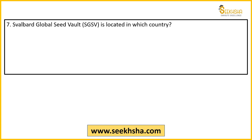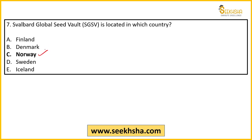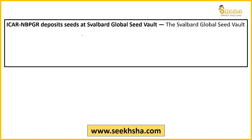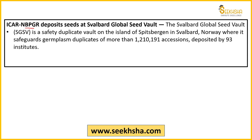Seventh and last question: Svalbard Global Seed Vault is located in which country? Options: Finland, Denmark, Norway, Sweden, Iceland. The right answer is Option C — Norway. India is also a major contributor, depositing seeds into this global vault through NBPGR. The vault exists to protect seeds from changing climate and conditions, ensuring they are ready for future use. The seed vault was opened on 26 February 2008.